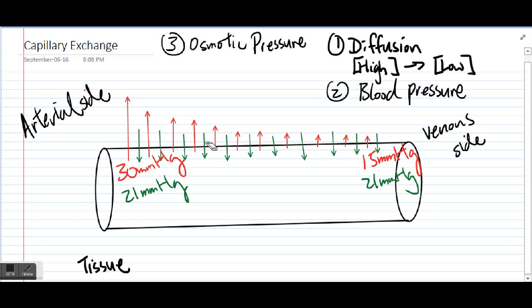Let's take a look at the arterial side. On the arterial side, the blood pressure, which is 30, is greater than the osmotic pressure, which is 21. So overall, you would have fluids pretty much leaving the capillaries on the arterial side.